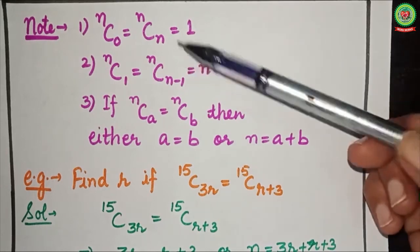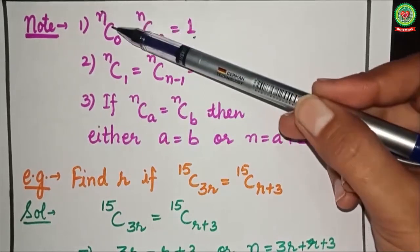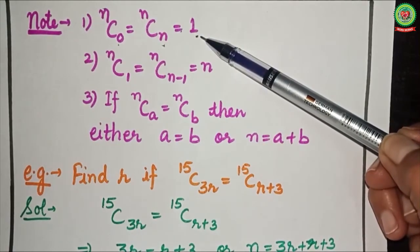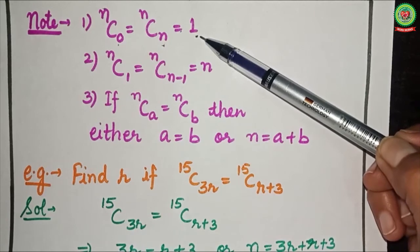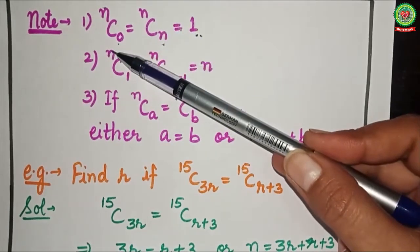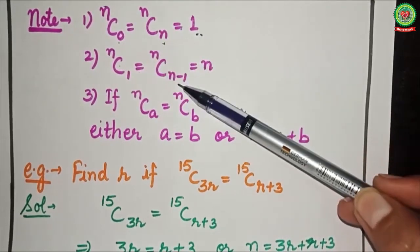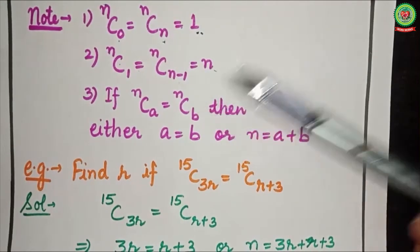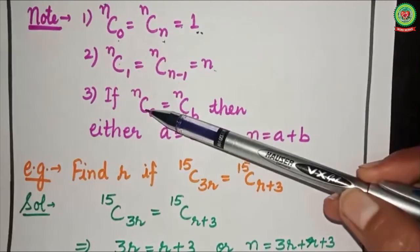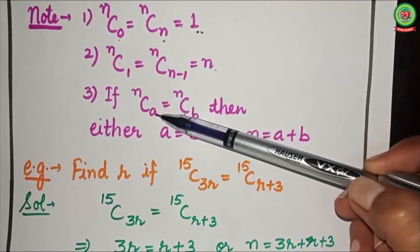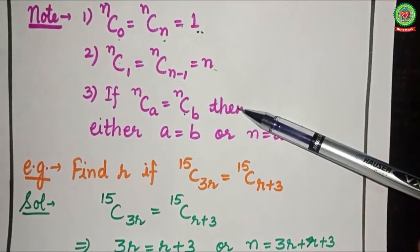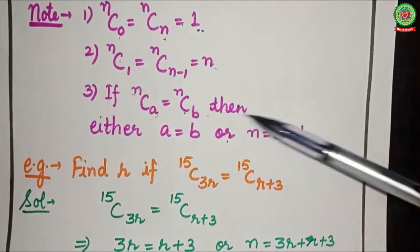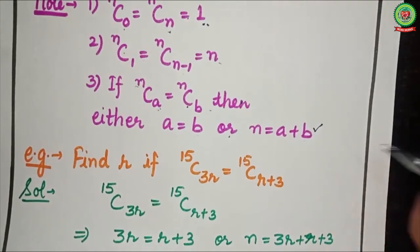Before the next example, note these important results: First, nC0 = nCn = 1. Second, nC1 = nC(n−1) = n. Third, and very important: if nCa = nCb, then either a = b or n = a + b. We will apply this third property in our next example.